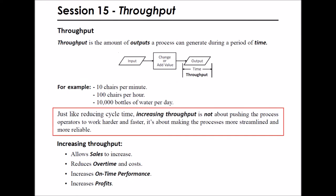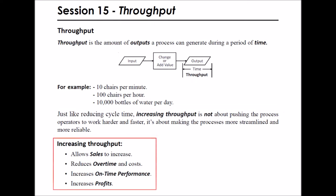Just like reducing cycle time, increasing throughput is not about pushing the process operators to work harder and faster — it's about making the processes more streamlined and more reliable. Increasing throughput allows sales to increase, reduces overtime and cost, increases on-time performance, and increases profits.